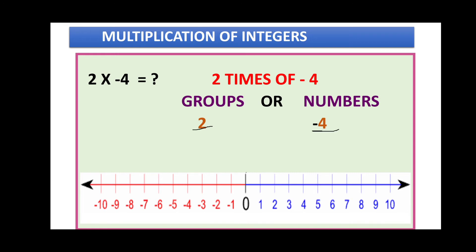Since our result is negative, we start taking jumps from zero to the left side of the number line. From zero we take four steps: zero to one, two, three, four — four numbers which makes one group. We still have to make one more group.